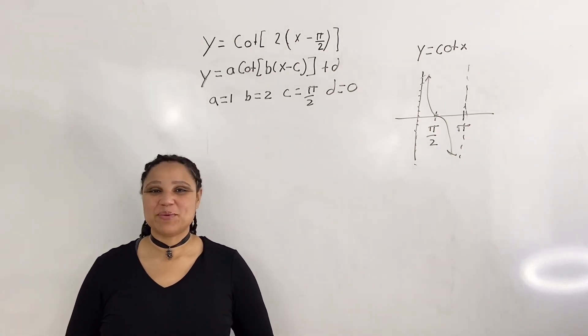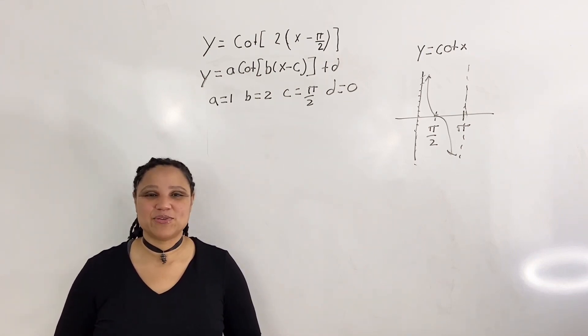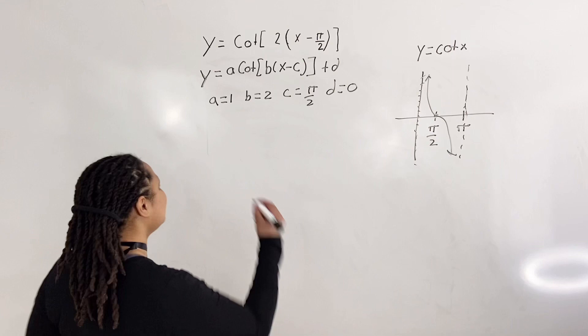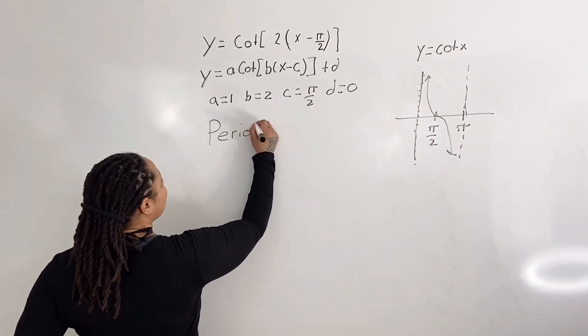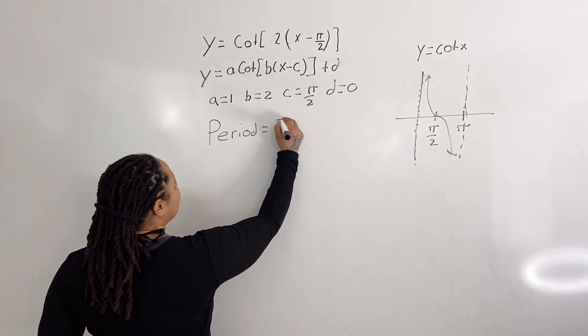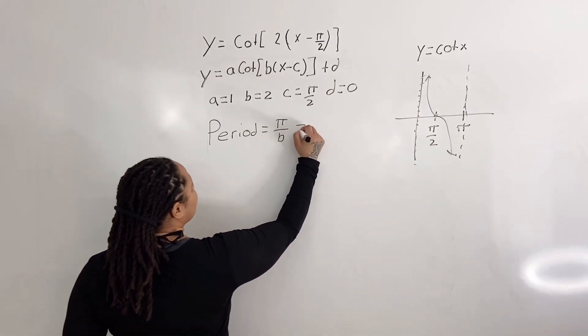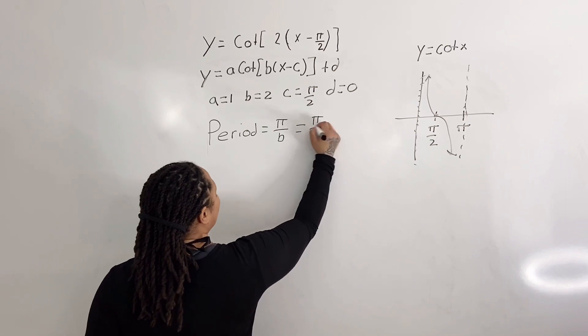So now we have an original graph so that we can model. So now we need to apply our transformations, and in order to do that, we need to compute the period. The period is equal to pi over b, which is equal to pi over 2.